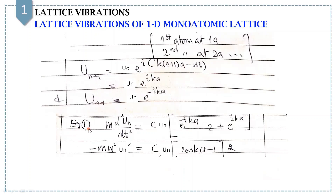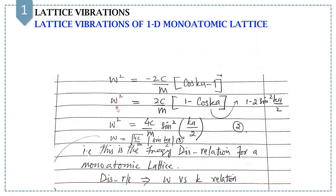Now equation number 1 will be updated: M d²U_N/dt² equals C·U_N into (e^{iKa} + e^{−iKa} − 2), which can be written in terms of cosine as 2(cos Ka − 1). This expression further simplifies to: omega squared equals (2C/M)(cos Ka − 1). Replacing cos Ka by 1 minus 2sin²(Ka/2), we get omega squared equals (4C/M) sin²(Ka/2) — this is equation number 2 — which gives omega equals sqrt(4C/M) |sin(Ka/2)|, equation number 3.